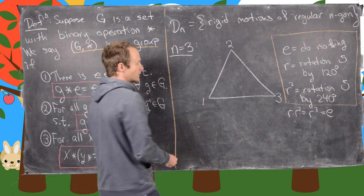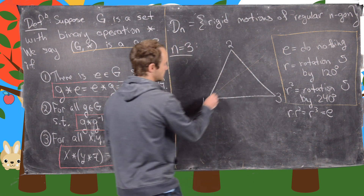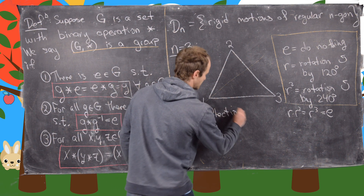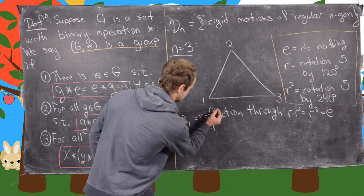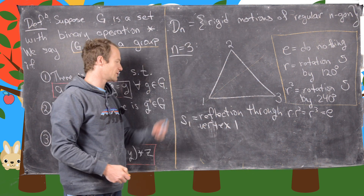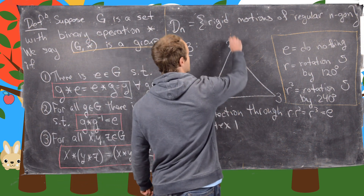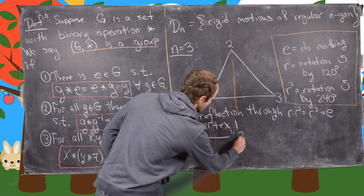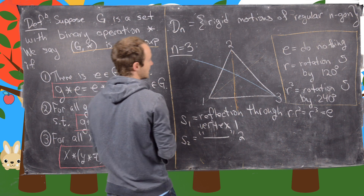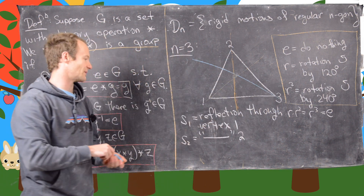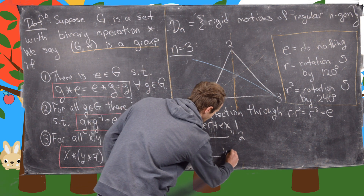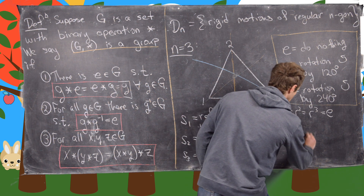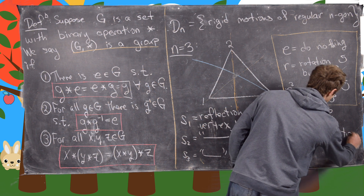We also have some reflections. We have a reflection that goes through vertex 1 — we'll call that S1, the reflection through vertex 1. Similarly, S2 is reflection through vertex 2, and S3 is reflection through vertex 3. Those are all of the possibilities, giving us six total rigid motions — sometimes called symmetries — of the equilateral triangle.